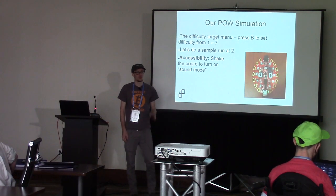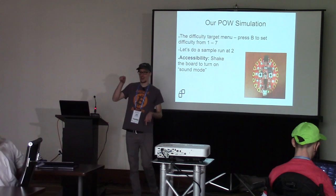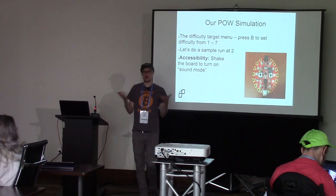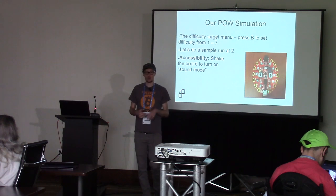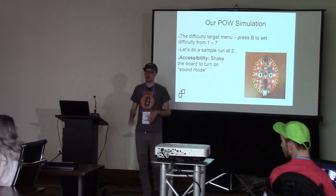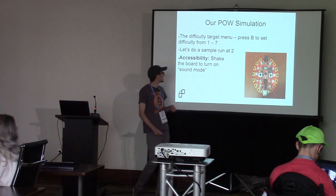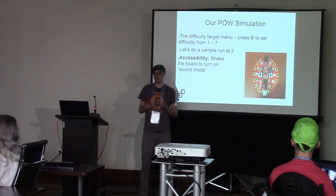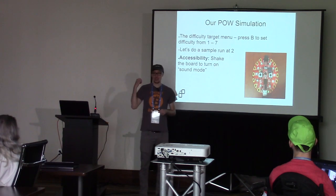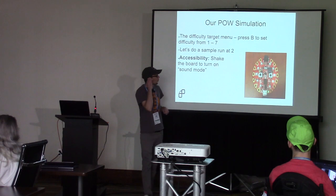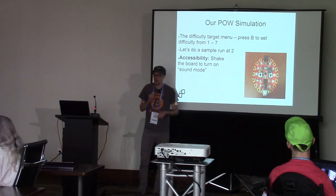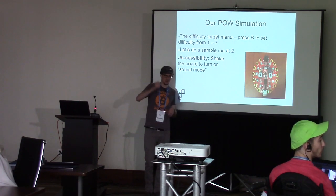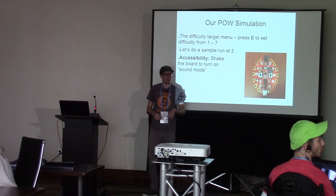Let's do a sample run at difficulty two. Press the B button and you'll see another LED light up. We have a toy 8-bit hash, so we have numbers represented by eight binary digits, and we're setting a difficulty target so we have two leading zeros in that number. If you have any issues seeing red and green, give the board a good shake and you'll hear it beep — that turns on a sound mode where you can hear the numbers.